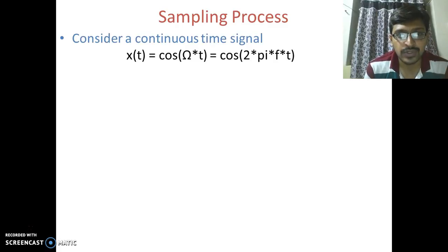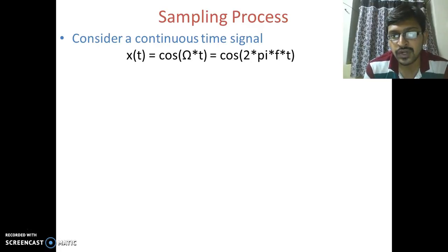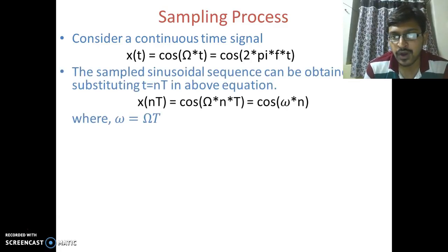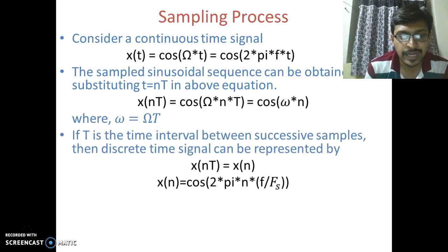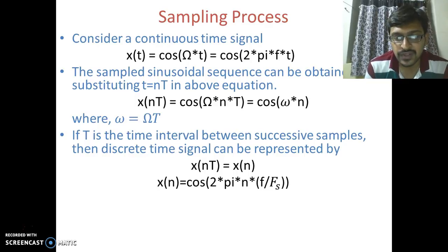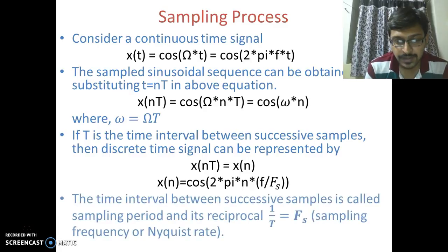Now let us understand what the sampling process is. Consider the continuous time signal x(t) given by cos(Ωt), where capital Ω is the analog frequency, equal to cos(2πft). The sampled sinusoidal sequence can be obtained by substituting t = nT in the above equation. So x(nT) = cos(ΩnT) = cos(ωn), where small ω is the digital frequency and ω = ΩT. If T is the time interval between successive samples, then the discrete time signal is x(nT) = x(n), and therefore x(n) = cos(2πn·f/fs), where fs is the sampling frequency, also called the Nyquist rate.